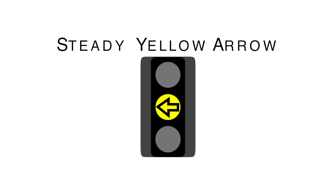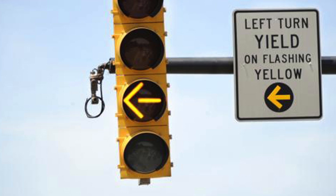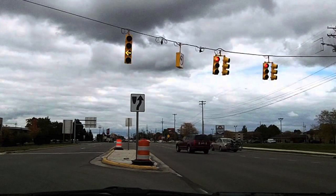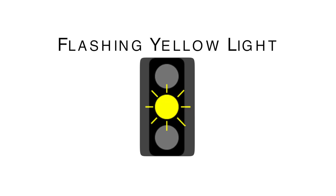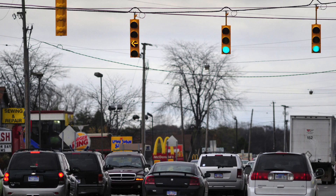Steady yellow: A steady yellow signal warns you that the signal is about to turn red. Stop before entering the intersection, or if you cannot stop safely, drive carefully through it. Flashing yellow: A flashing yellow signal means to slow down and proceed with caution.